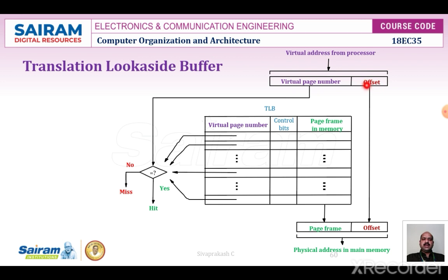The diagram shows the virtual address space consisting of a virtual page number and an offset. The page number, control bits, and frame number are entered into the TLB. Based on the flowchart, if there is a match, a hit occurs; if not, a miss is indicated. The page number and offset are entered into the TLB through this look-aside buffer table.